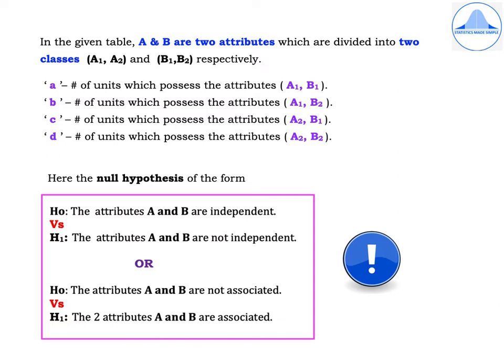For the chi-square test for independence of attributes, the null hypothesis is: H0 — the attributes A and B are independent, versus H1 — the attributes A and B are not independent. In the literacy and employment example, H0 would be: literacy and employment are independent, versus H1: literacy and employment are not independent. Depending on whether the question uses the word 'independent' or 'associated,' write H0 and H1 accordingly.